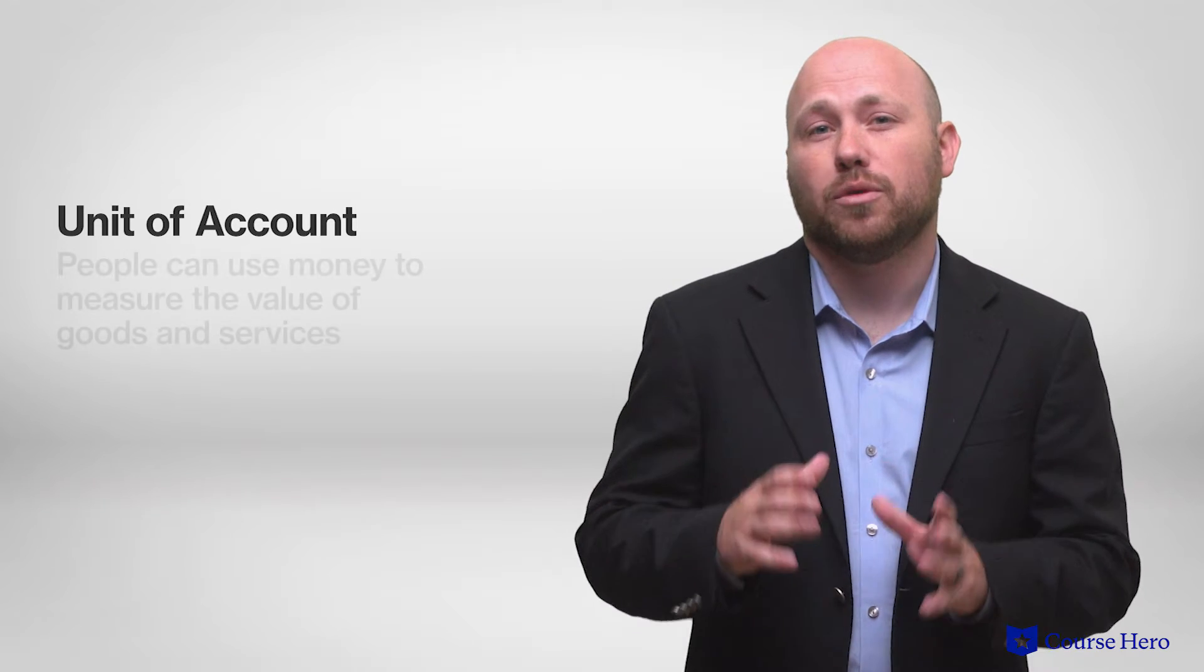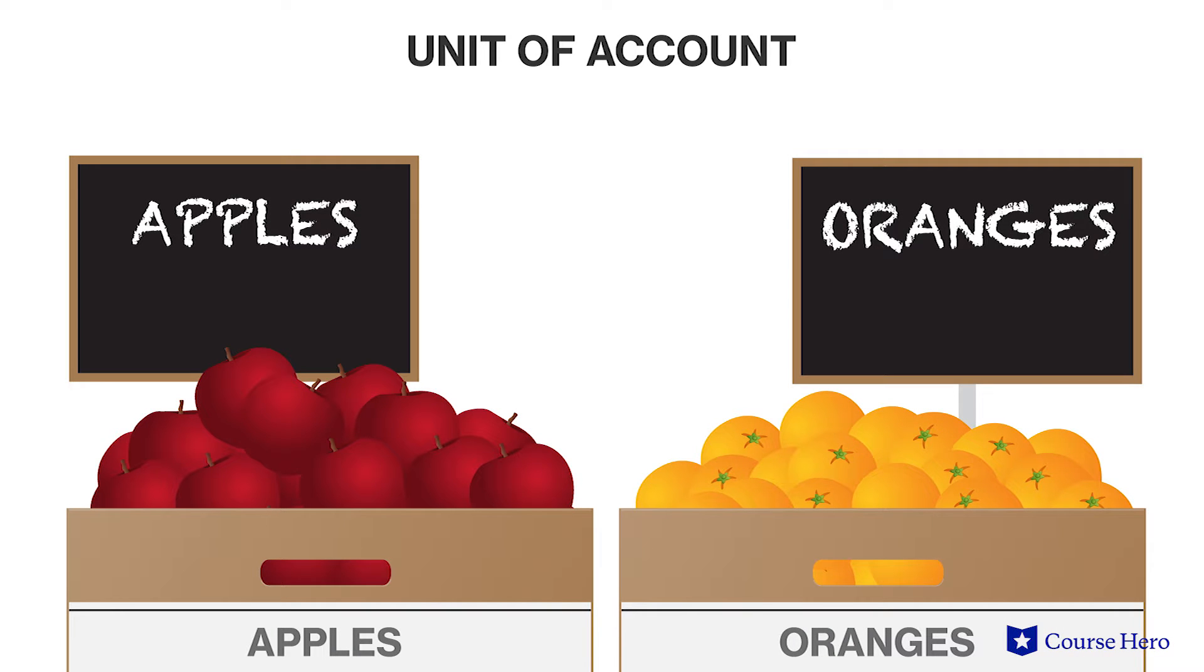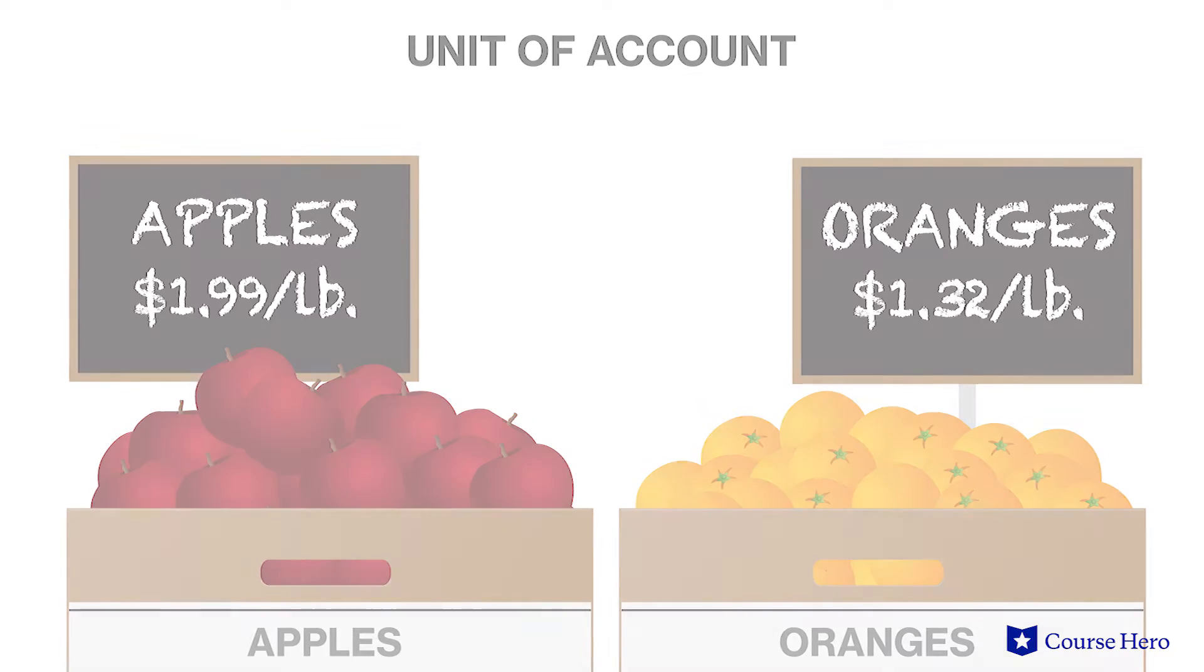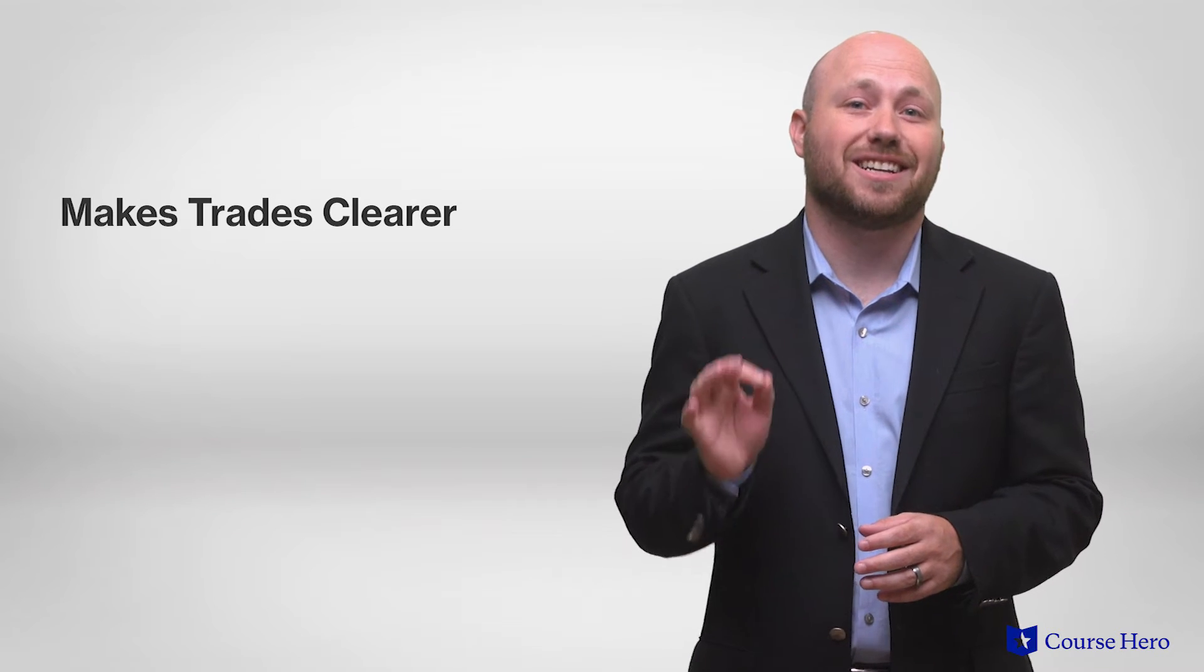Money's second role in the economy is to serve as a unit of account, which means that people can use money to measure the value of goods and services. Money enables people to compare apples and oranges by providing a common unit, such as a price, with which to compare value of one against the other. It provides a common language across individuals as well as makes trades clearer.